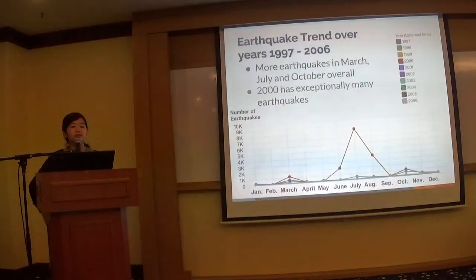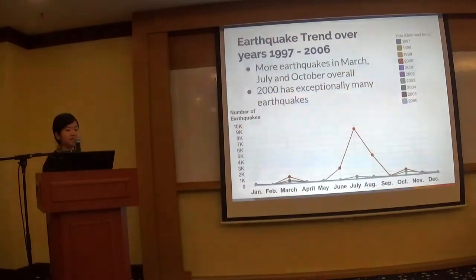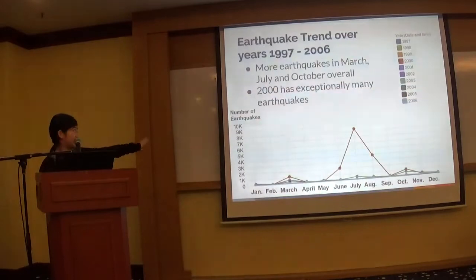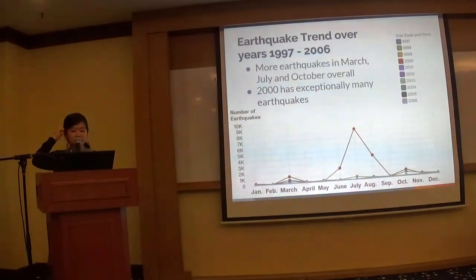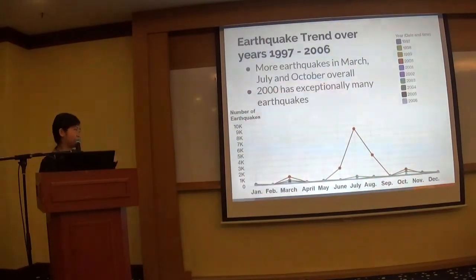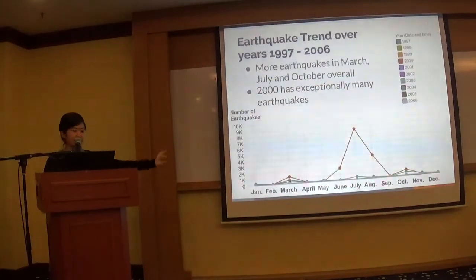This is the earthquake trend from 1997 to 2006. Now there are way more earthquakes — the vertical axis goes up to 10,000. There are a lot of earthquakes in July, but also a small increase in March and October, as you can see.